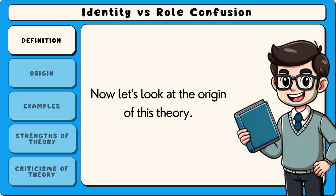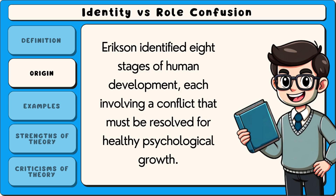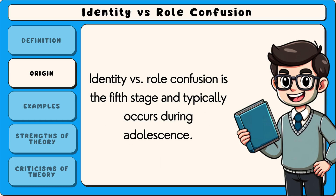This stage is a critical part of personal development as it helps shape long-term identity and future decisions. The identity versus role confusion stage was introduced by psychologist Erik Erikson as part of his theory of psychosocial development. Erikson identified eight stages of human development, each involving a conflict that must be resolved for healthy psychological growth. Identity versus role confusion is the fifth stage and typically occurs during adolescence.